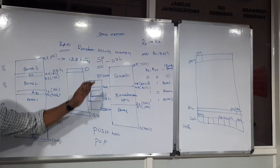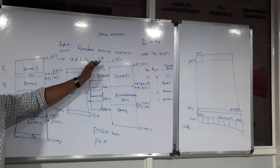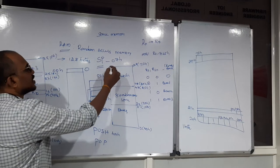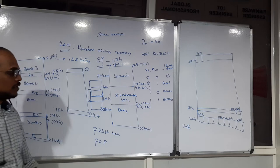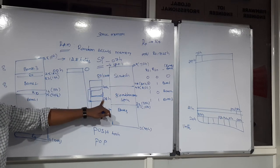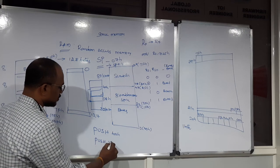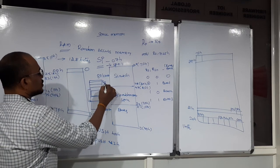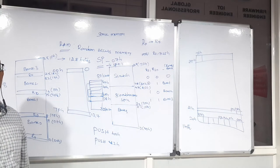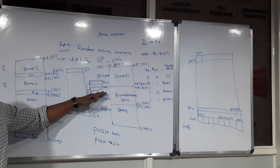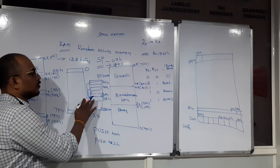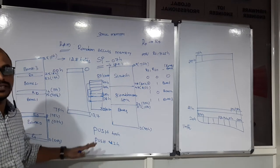The basic definition of a pointer is that it holds the address of a memory location, and the stack pointer holds 07H by default. Whenever you use a PUSH instruction in a program, the stack pointer increments automatically by one. For example, writing PUSH 40H moves data from address 40H into the stack at 08H. Writing a second instruction, PUSH 42H, saves data from 42H into address 09H. Stack memory allows sequential data storage — no need to manually do increment or decrement operations, which is a major advantage.